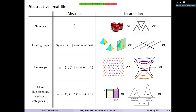Let me start by explaining what I think about representation theory, what it is, and why I care. I have this little nice table here. The whole idea of representation theory, in my opinion, is that almost everything you will ever see in your mathematical life might come in two incarnations: an abstract incarnation and a real-life incarnation. For instance, we have the abstract concept of a number like three, but there might be real-life incarnations — three apples, or three triangles. They're kind of the same thing, but a different viewpoint on the same beast.